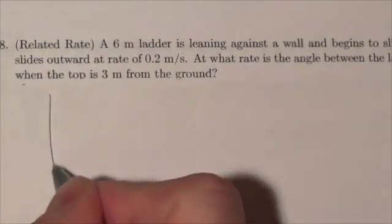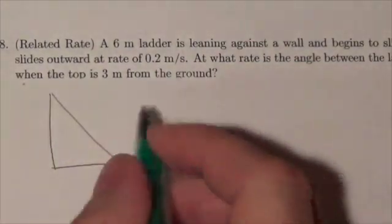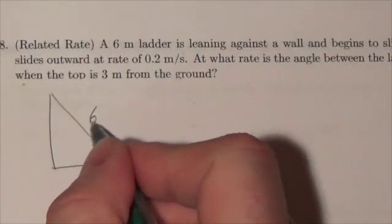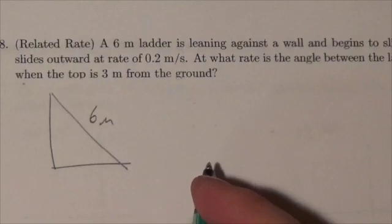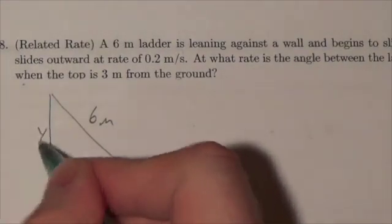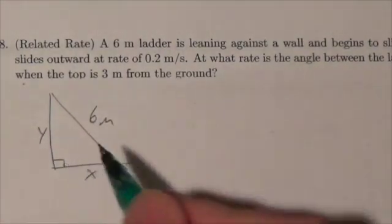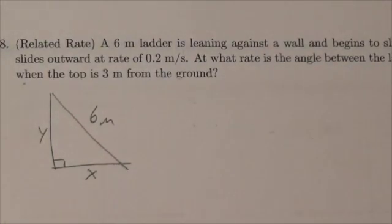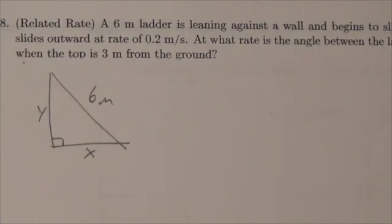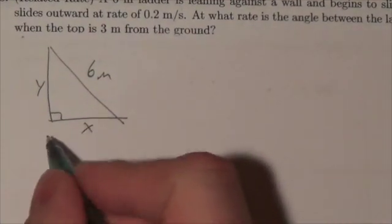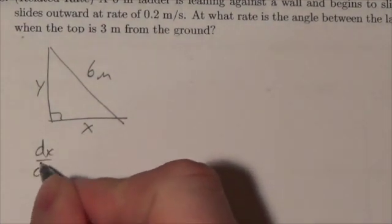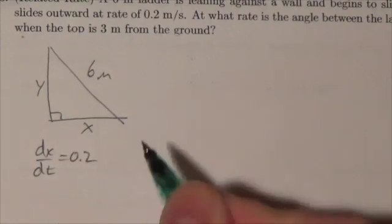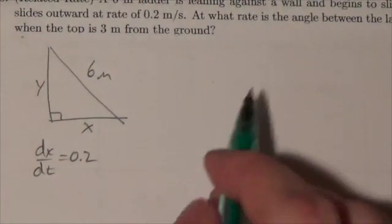Okay, let's take a quick look at what's going on here. So here's our ladder, it's 6 meters long, and let's call this x and this y here. We're going to assume that the wall is perpendicular to the ground. It says the foot of the ladder slides outward at a rate of 0.2 meters per second, so dx/dt is going to be 0.2.